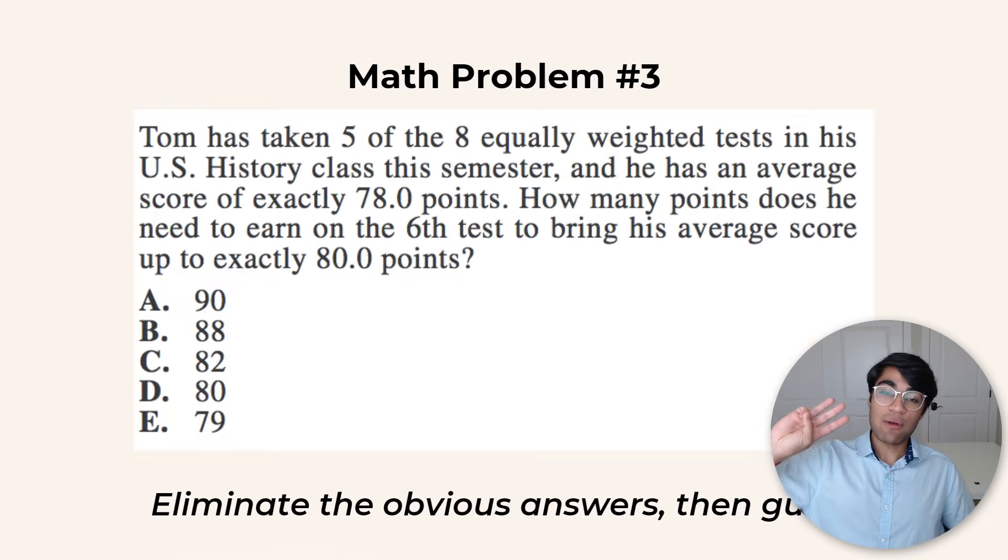Math problem number 3. Let's say we have this problem right here. You can use your process of elimination, but in an interesting way—by eliminating answers that are too obvious. As you can see here, it asks us to figure out what Tom needs to get on the 6th test in order to get an average score of 80 points if he currently has 78 points on 5 tests.